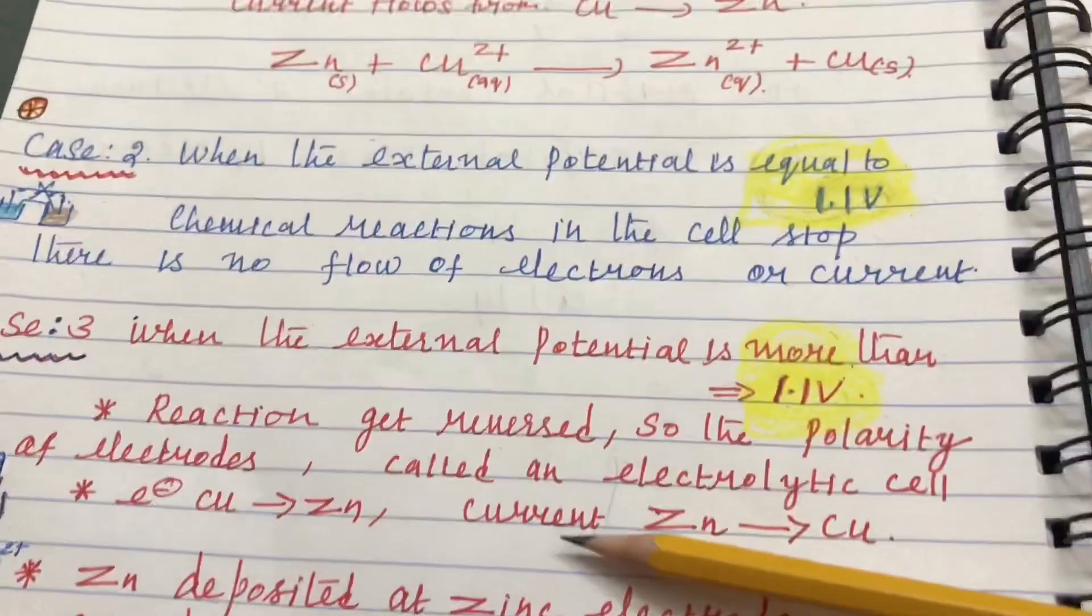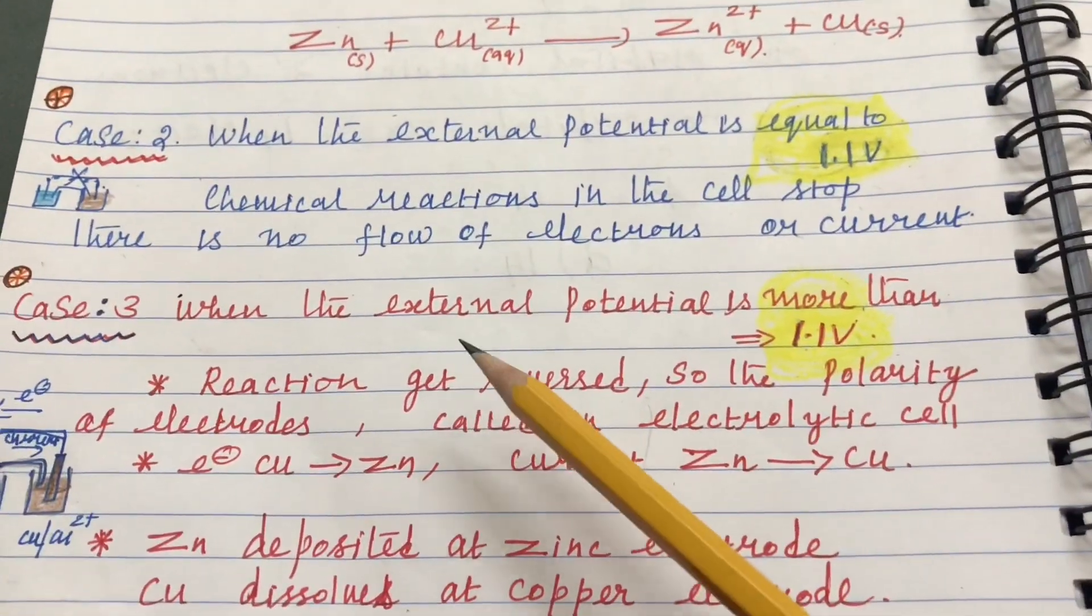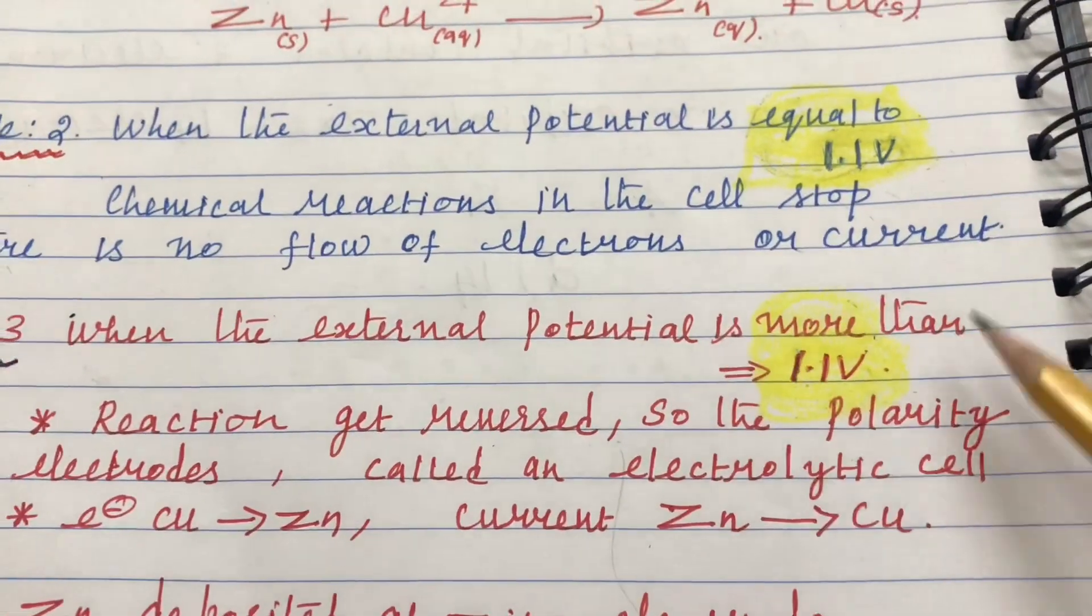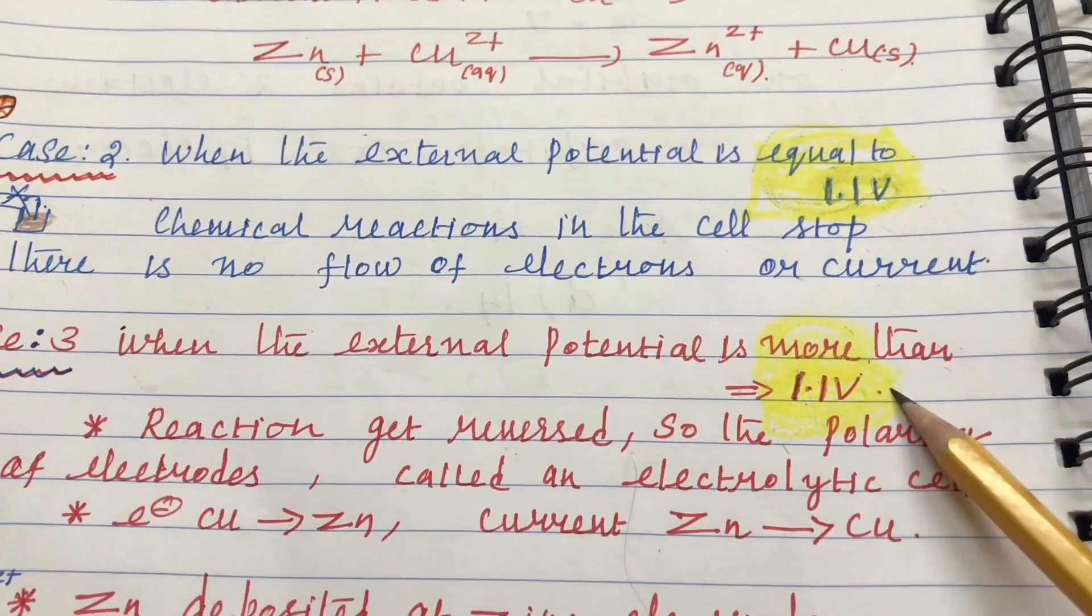Next, going to the third case. What is the third case? When external potential is more than 1.1 volt,